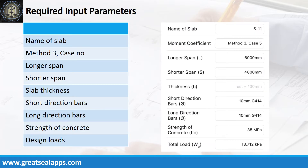Enumerate input parameters required. Name of slab: S11. Case 5 panel design. Longer span: 6,000 mm. Shorter span: 4,800 mm. Slab thickness: 130 mm. Main bars: 10 mm bar at grade 414. Strength of concrete: 35 MPa. Factored load: 13.712 kPa.